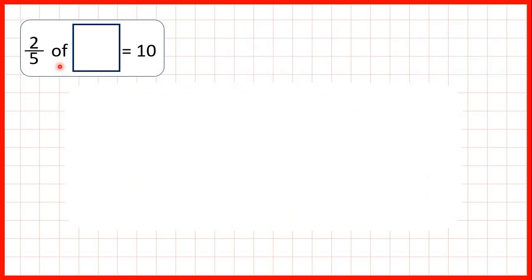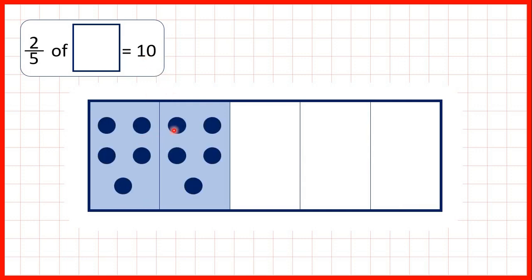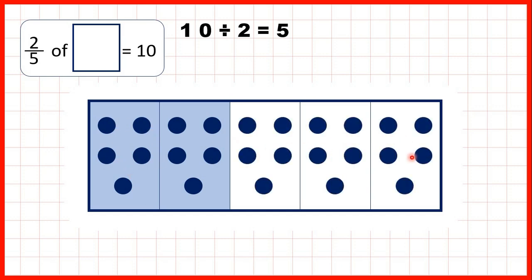Let's look back at the first question. We knew that two-fifths of something was 10, so we can show a fraction bar split into fifths with 2 fifths highlighted. We know 10 is in those 2 fifths, so we divided 10 by 2 to get 5 — telling us there are 5 counters in each fifth. If there are 5 counters in each of our fifths, there must be 5 in the others too. So we multiplied 5 by 5 to get 25, because there are 5 fifths in the whole quantity.